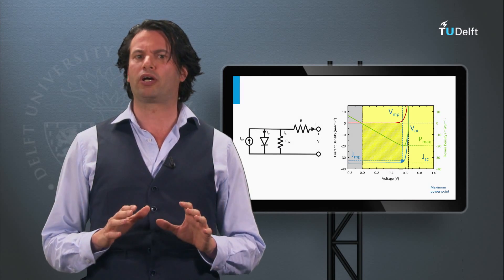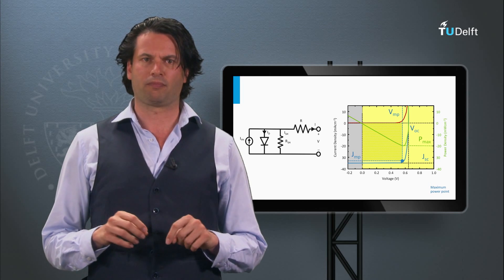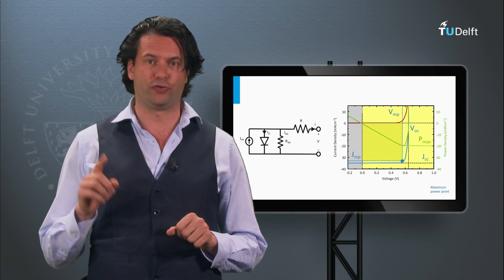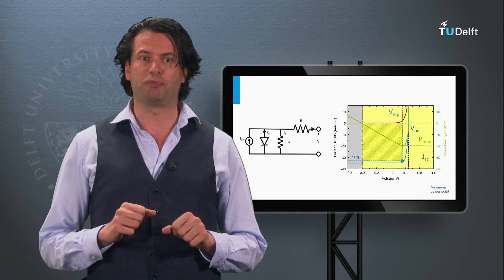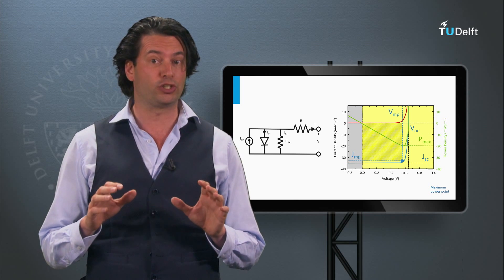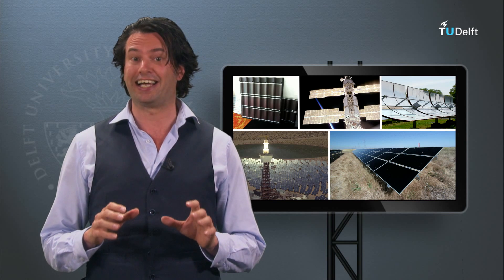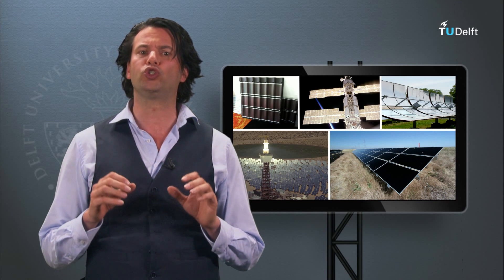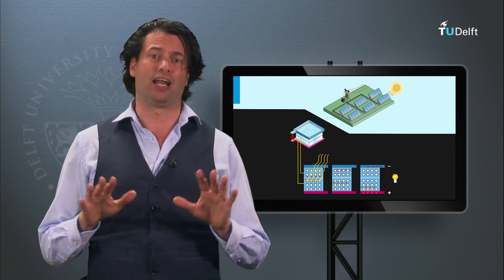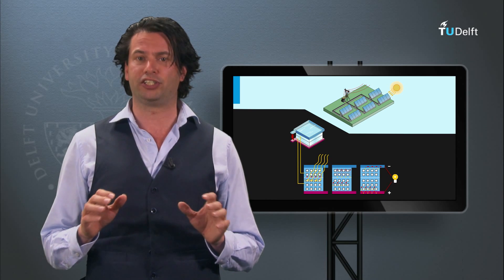In this first block I would like to give you a short overview of the course. The course can be divided in three major parts. The first part, week 1 up to 3, covers the fundamental physical principles on which the solar energy technologies are based. The second part, week 4, 5 and 6, discusses all solar energy technologies. The third part and last part, week 7 and 8, discusses the solar energy systems.